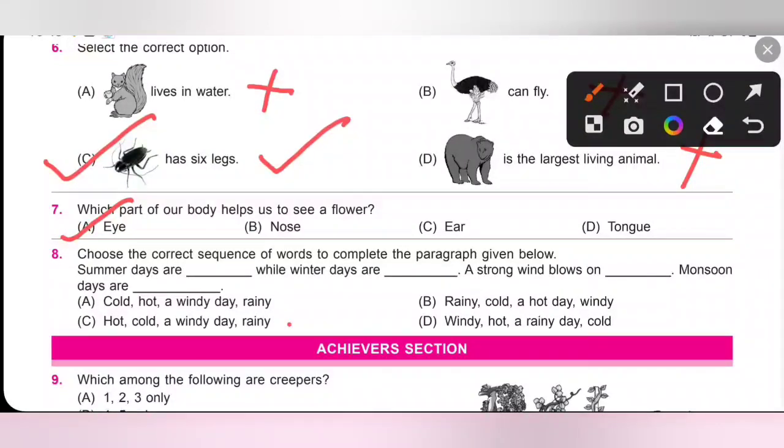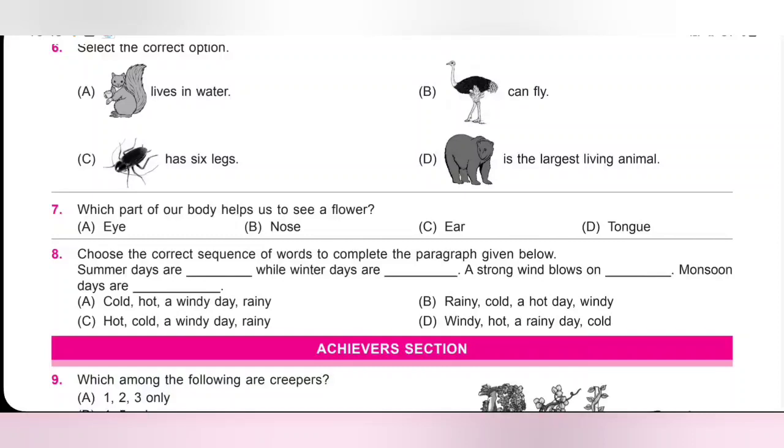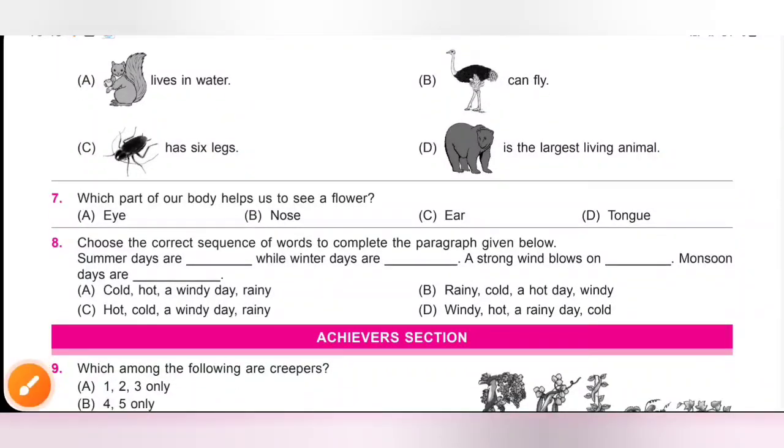Eighth one, choose the correct sequence of words to complete the paragraph given below. Summer days are dash, while winter days are dash. A strong wind blows on dash. Monsoon days are dash. So, we know summer days are hot, while winter days are cold. A strong wind blows on windy day. Monsoon days are rainy. So option C is the correct answer.